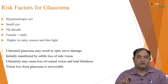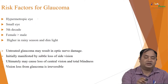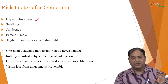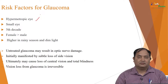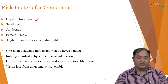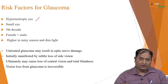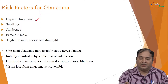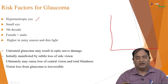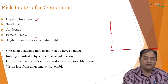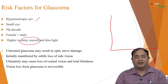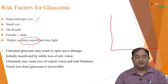When you look at the risk factors for glaucoma, one is a person with a hypermetropic eye — typically a person with a small eye. Once a person crosses the fifth decade — after 50 years — females are more prone compared to males. It also shows a diurnal variation: morning and evening pressures differ, and intraocular pressure particularly increases during the rainy season and in dim light.